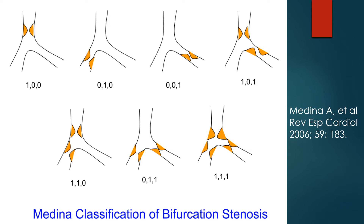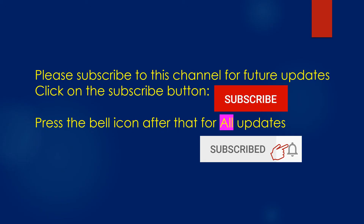The three components are the proximal region of the main branch, the distal region of the main branch, and the side branch. If there is more than 50% stenosis, a value of 1 is assigned. A value of 0 is assigned if the stenosis is less than 50%.